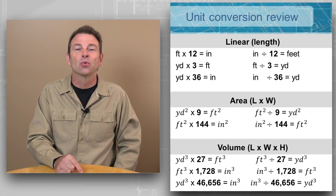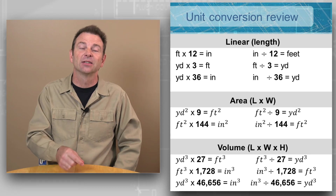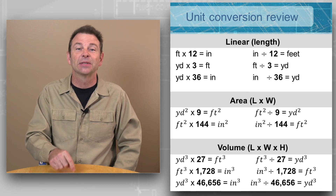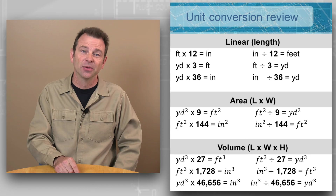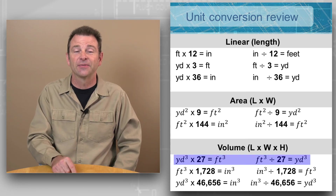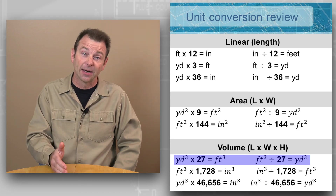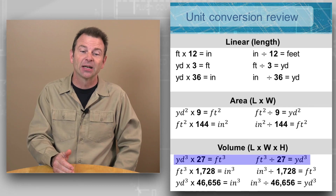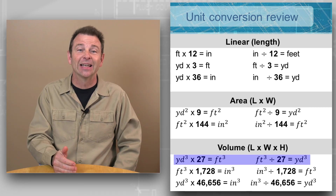So lastly, we're dealing with volume. Volume is going to add our third dimension, so now we have length times width times height — we're dealing with cubic units. For cubic yards to cubic feet or cubic feet to cubic yards, we're going to use the factor or number 27.